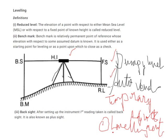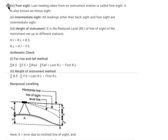After doing all those temporary adjustments, the definitions we normally come across in leveling are: reduced level, benchmark, height of instrument, and foresight. These are the common terms we encounter in leveling.